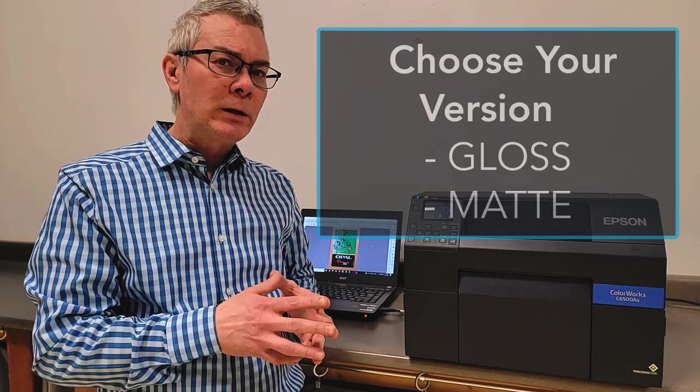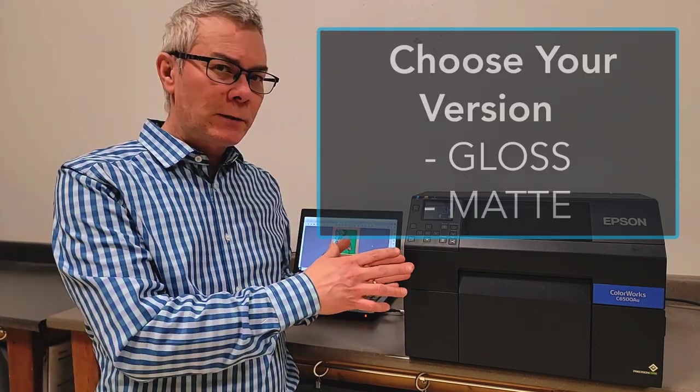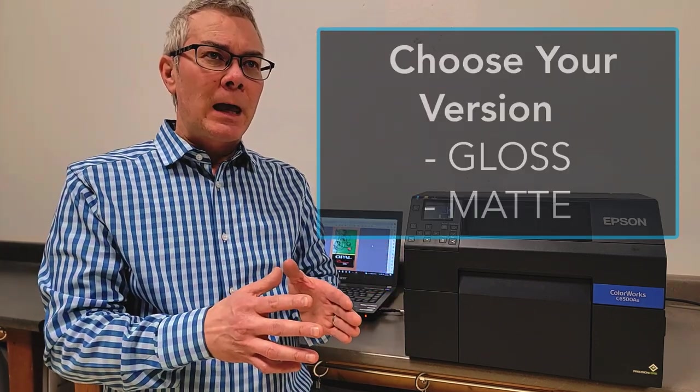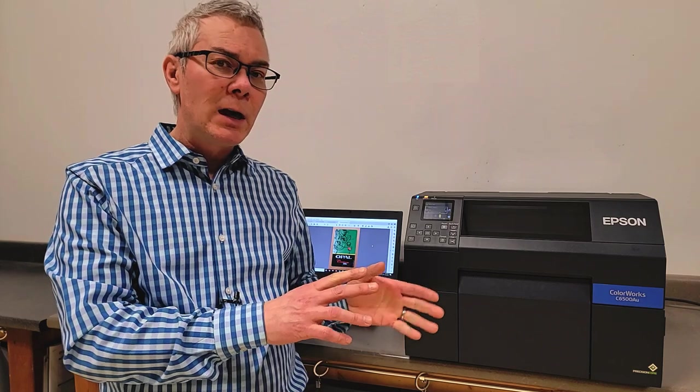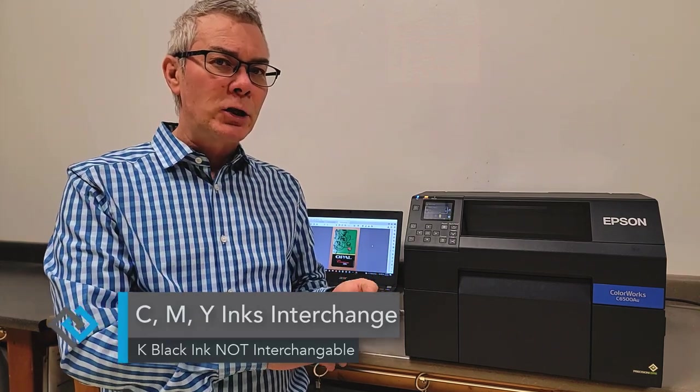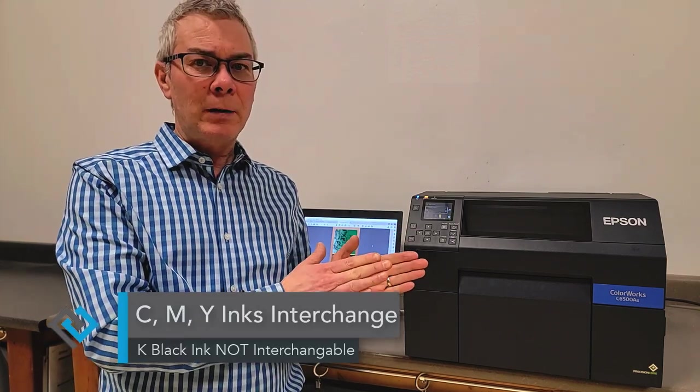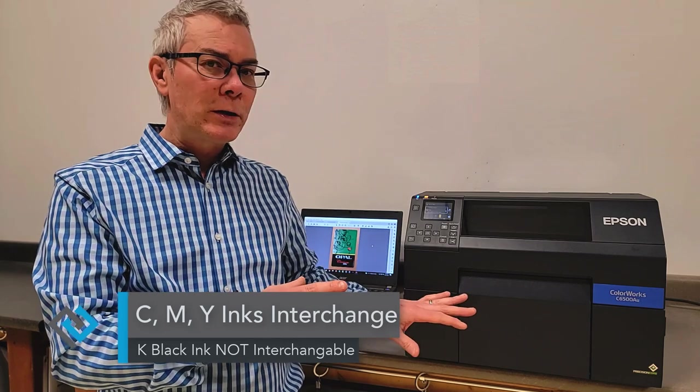With the printers, when you're making your decision in the beginning, there's another thing you need to realize. There's two versions. There's a gloss version and a matte version, and the reason for this is the inks are all the same. They use the CYMK ink cartridges for all the printers, but the K, the black cartridge, you have to choose either a gloss black or a matte black, and that's the printer you're choosing.